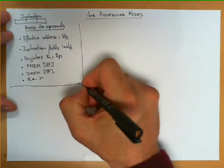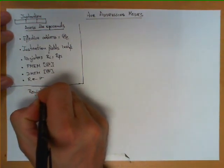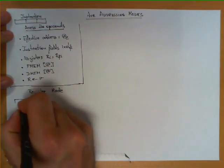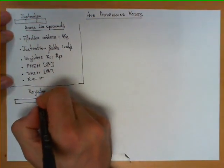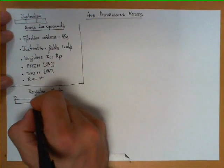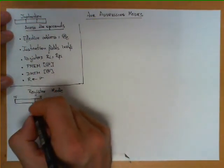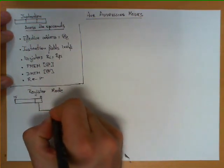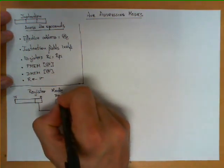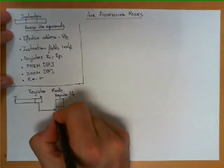The first and simplest addressing mode is known as register mode. You get an instruction — most instructions have 16 bits, so we assume the instruction goes from bit 0 to bit 15. There is one field in this instruction, not necessarily placed in one contiguous location but possibly spread over the 16 bits, and this field specifies one particular register from the register file. In that register is where we find the operand.